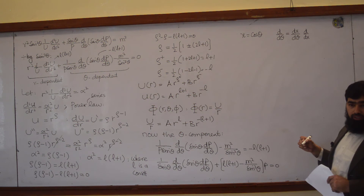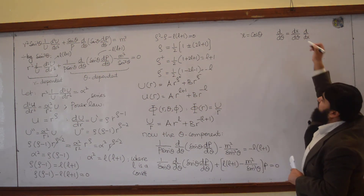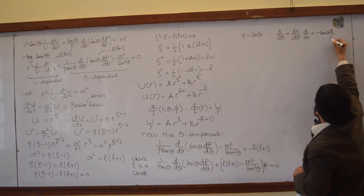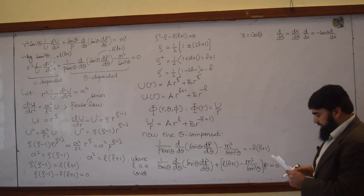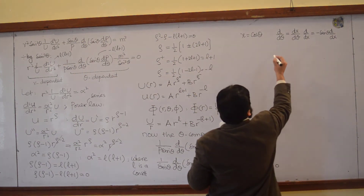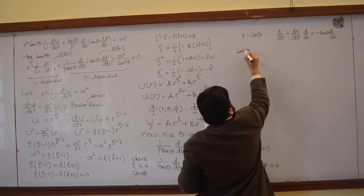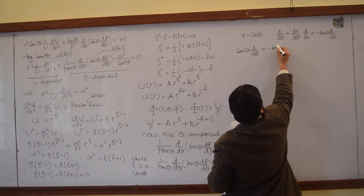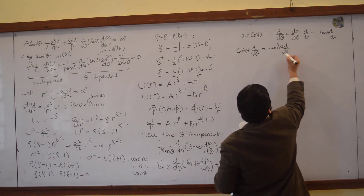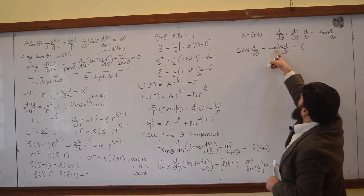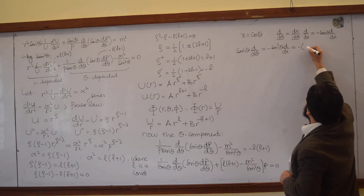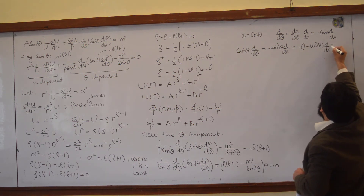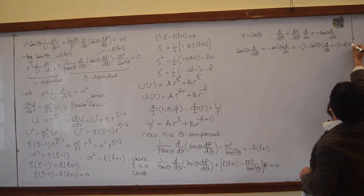Multiplying by sin theta gives sin theta d by d theta equals minus sin squared theta d by dx, which equals minus (1 minus cos squared theta) d by dx, and since cos theta equals x, this is minus (1 minus x squared) d by dx. So we have converted sin theta d by d theta into terms of x. For 1 over sin theta d by d theta, dividing through gives minus d by dx. This allows us to rewrite the entire angular equation in terms of x.